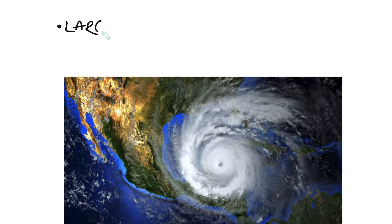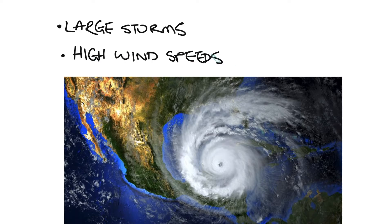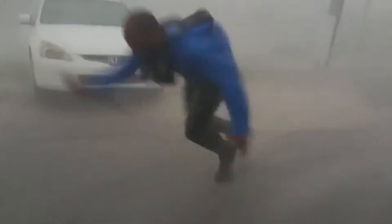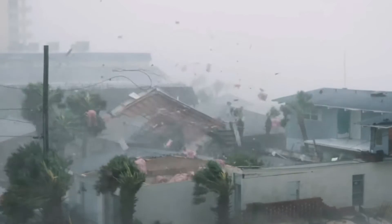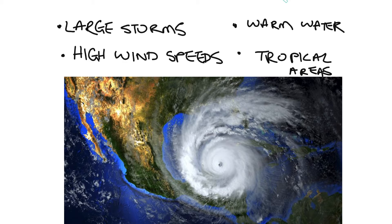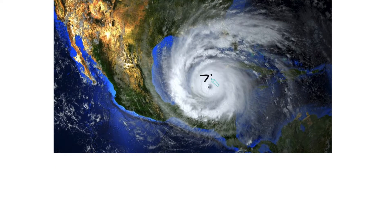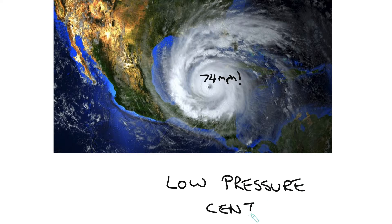Hurricanes are normally large storms with high-speed winds that typically form in very warm waters in tropical areas. Hurricanes are normally classified by the speed of their winds, which is usually 74 miles per hour, with a very low pressure center area called the eye.